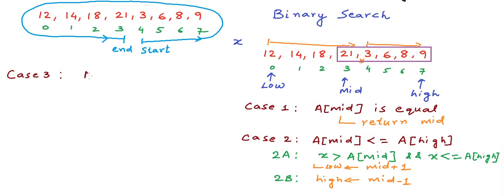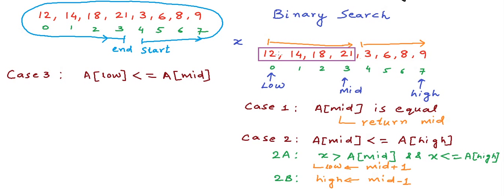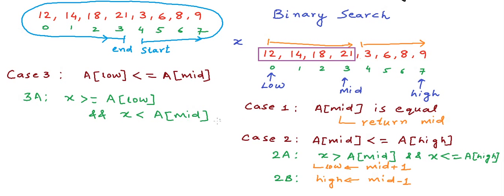Case three: if a[low] <= a[mid], then the left half from low to mid is sorted. Again, two conditions: if x >= a[low] and x < a[mid], then x is probable to lie in the left half, so we adjust high to mid - 1. Otherwise, we go searching to the right by adjusting low to mid + 1. This is our divide-and-conquer strategy for binary search. Let us now write code for this and see if it works.